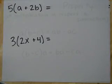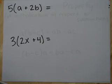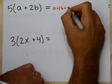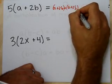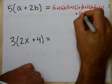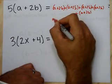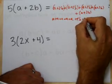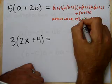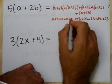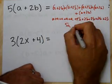Look: 5 times (A plus 2B). Remembering what multiplication is, that's just five copies of (A + 2B) added together, which gives us five As and ten Bs. Using the distributive property, I can just distribute: 5 times A plus 5 times 2B, giving me 5A plus 10B.